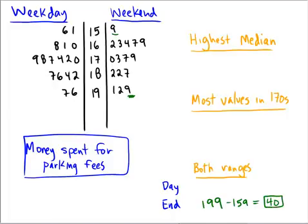For the weekdays, the highest value is also in the 190s, but it's 197, not 196. For the low end, going up into the 150s, there's a 151 and a 156. Since 151 is lower, that's our minimum. So 197 minus 151 gives us a range of 46 for the weekdays.